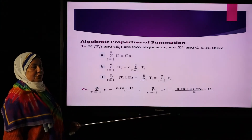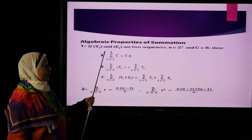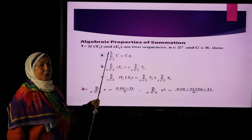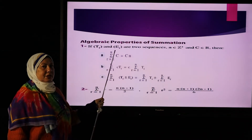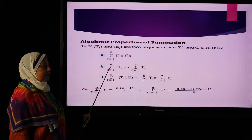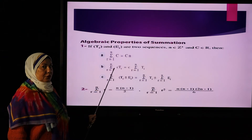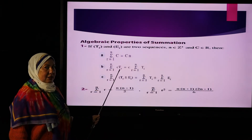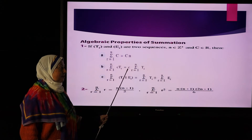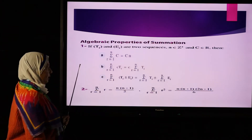Some properties of summation notation. The first property: summation notation from r=1 to n of any constant equals the constant times the number of terms. The second rule: summation notation from r to n of c·tr, where c is a constant, equals the constant c times the summation notation of the general term tr.